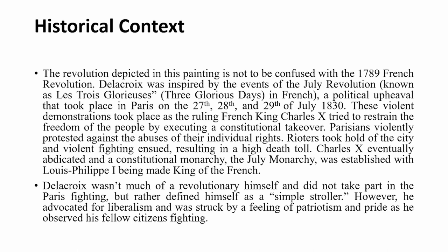Parisians violently protested against the abuses of their individual rights. Rioters took hold of the city, violent fighting started, and it resulted in a high death toll. The result was that Charles X was eventually abdicated, and the constitutional monarchy known as the July Monarchy was established, with Louis-Philippe I being made King of the French.